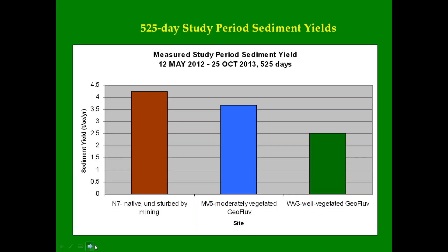Geofluv cooperated with BHP Billiton on a sediment study to verify reclamation performance. The study measured sediment yield from three matched sites: native sub-watershed, Geofluv design with top dressing and moderate vegetation, and Geofluv design with well-established vegetation. The sub-watersheds were matched by area, overall slope, aspect, and channel slope profiles. Temporary sediment dams were constructed across the sub-watershed outlets to capture all water and sediment runoff for a bank-full event. The study results showed that the sediment yield from the Geofluv design with top dressing and moderate vegetation was comparable to the undisturbed native site, and the Geofluv design with well-established vegetation produced significantly less sediment yield than the native site.